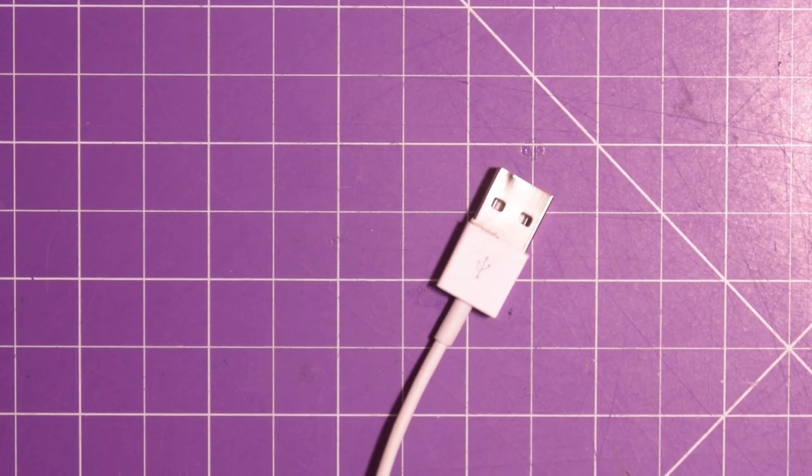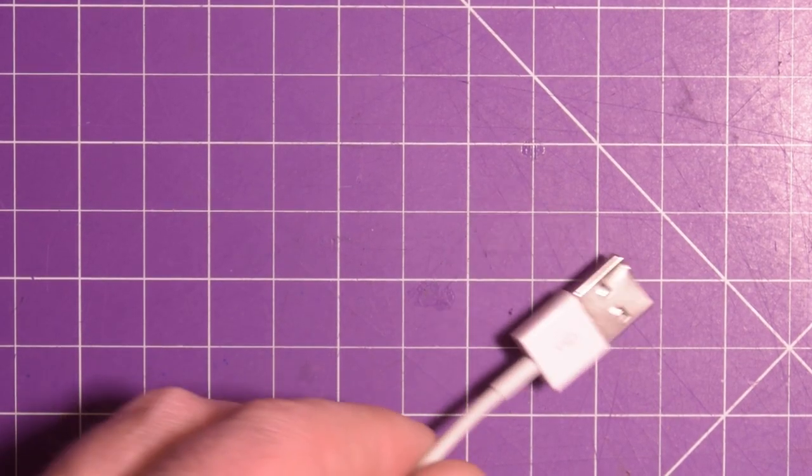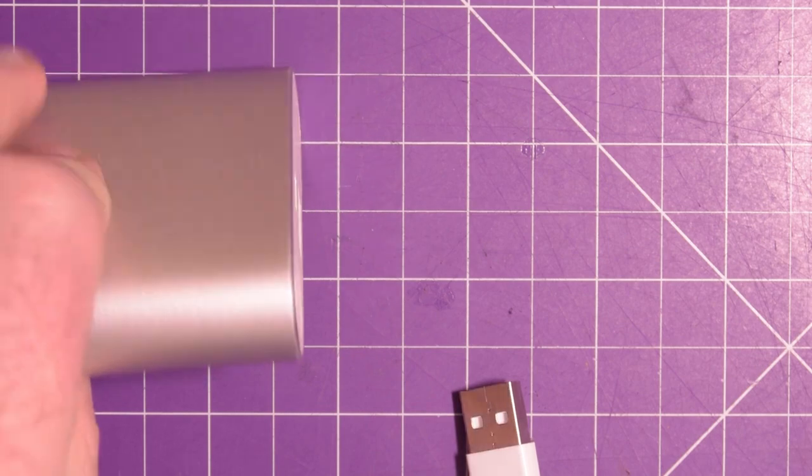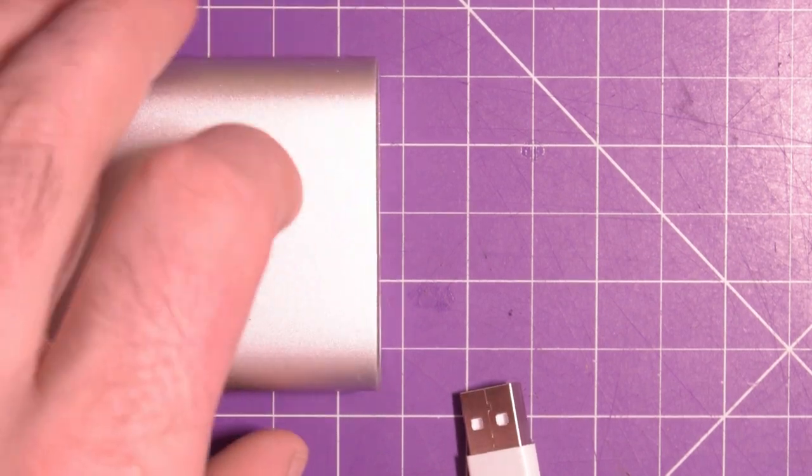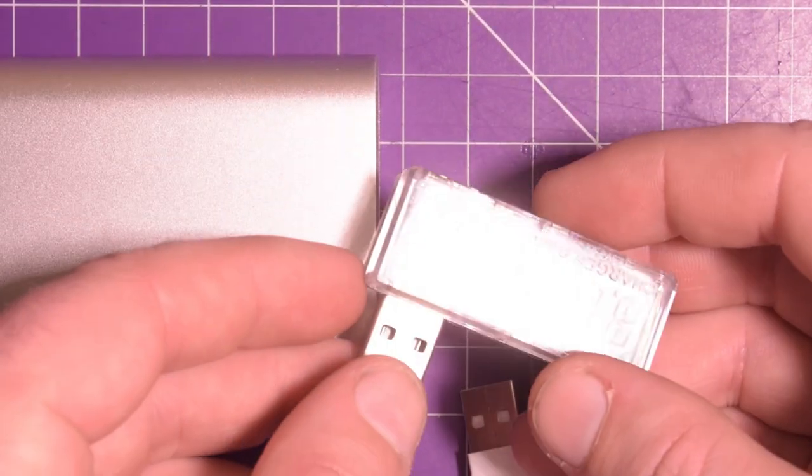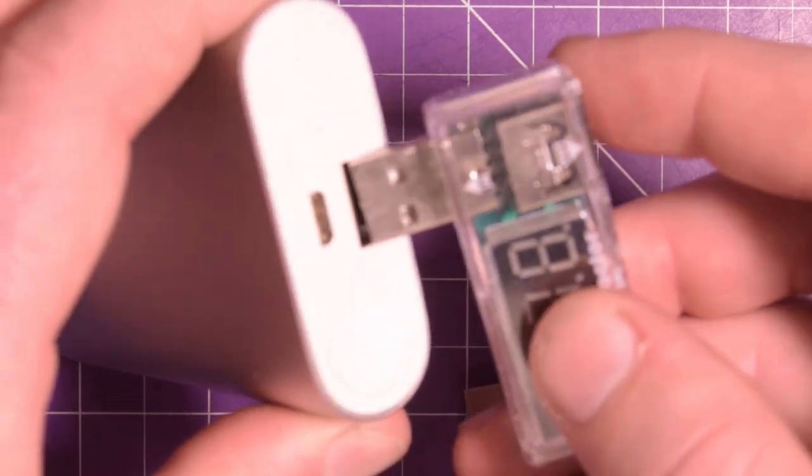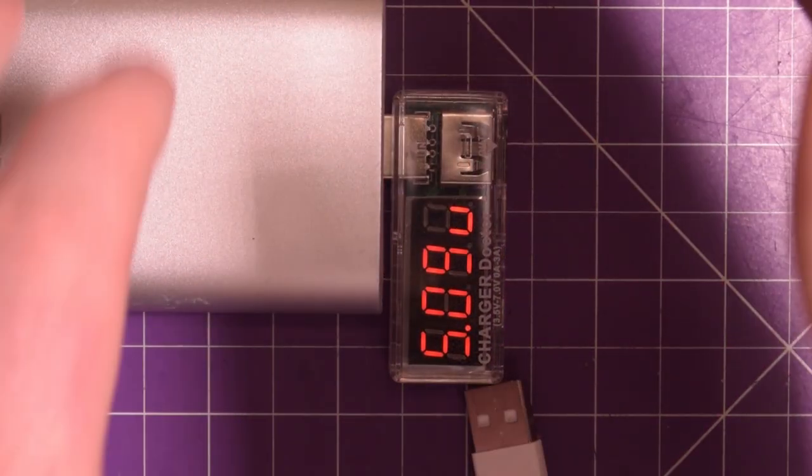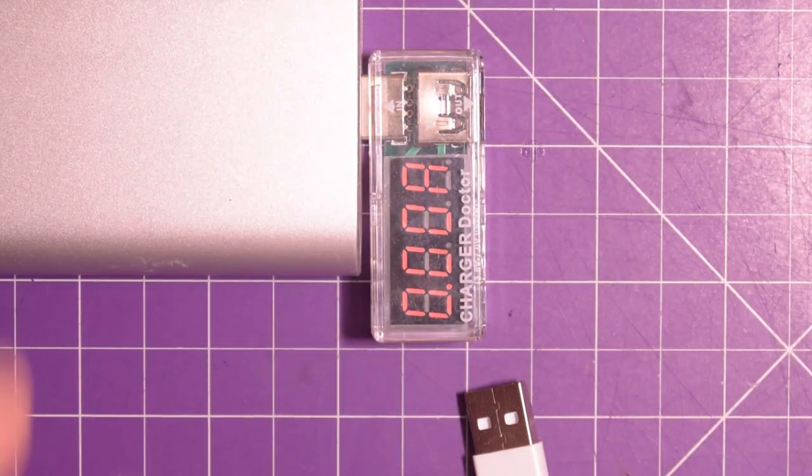So all that's left is testing this thing. And how do I test it? Well, I got here a power bank. This is a Xiaomi Mi, something like that, 10,000 milliamp hour power bank. I have a charger doctor here, which I'll probably have to adjust the lighting so you can see. There we go, showing 5.09 volts.